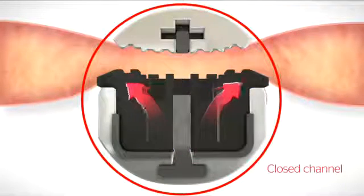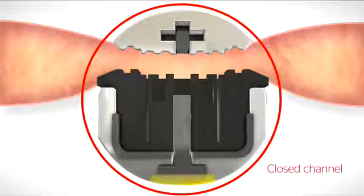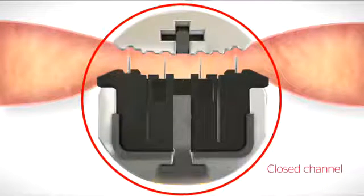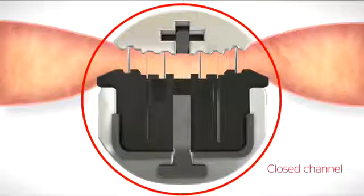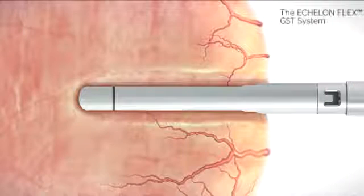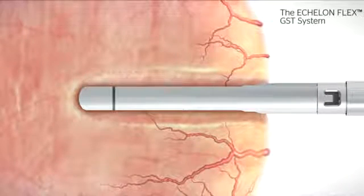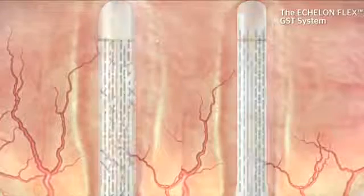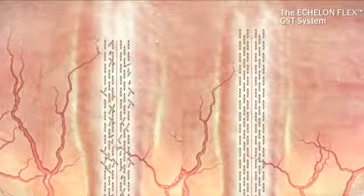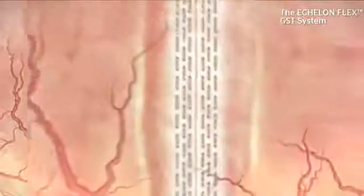Only the Echelon Flex Powered Plus stapler has a closed bottom channel to reduce lateral jaw deflection during E-beam advancement and provide the most rigid foundation. The combination of these improvements makes the GST system uniquely designed to deliver better gripping power to provide the least slippage during firing of any leading endo cutter.